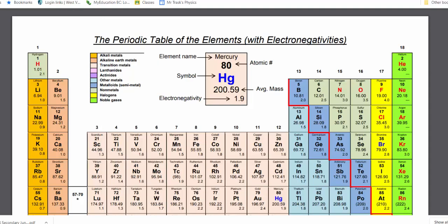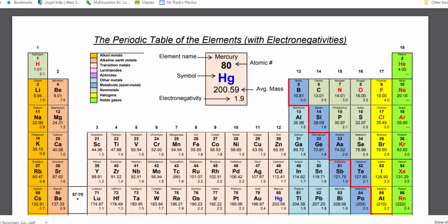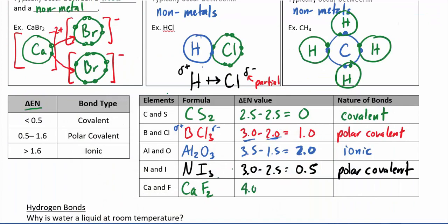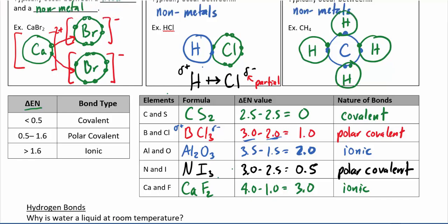Last one: calcium and fluorine forming CaF₂. Fluorine is the most electronegative element at 4.0, and calcium is just 1.0, giving a difference of 3.0. That definitely puts this well above 1.6, so this is definitively an ionic bond — fluorine is just going to completely rip the electron away from calcium.